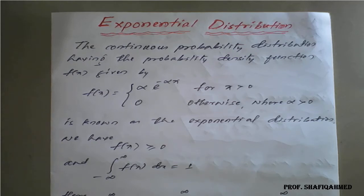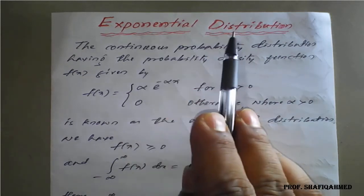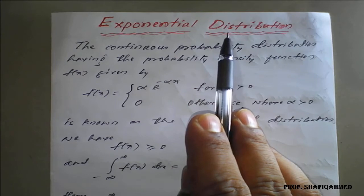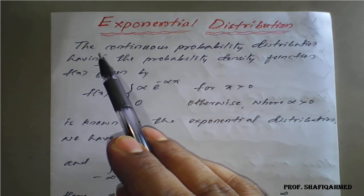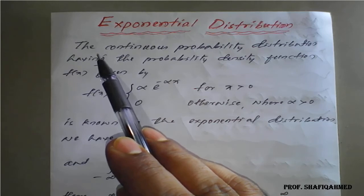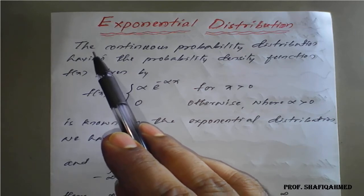Under continuous random variables, we have the exponential distribution and the normal distribution, which will come under our syllabus. Today we will see exponential distribution, which comes under continuous distribution. Continuous means we will get integration — it has an infinite number of experiments from which we have to find the probabilities. The exponential distribution is given by a continuous probability distribution.